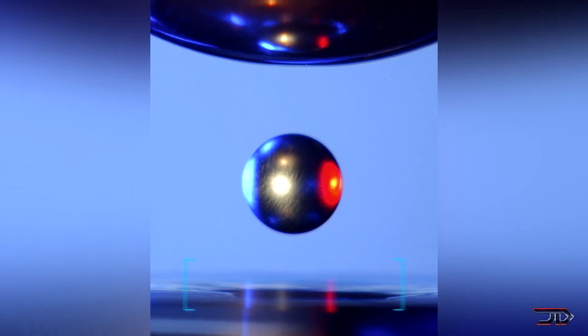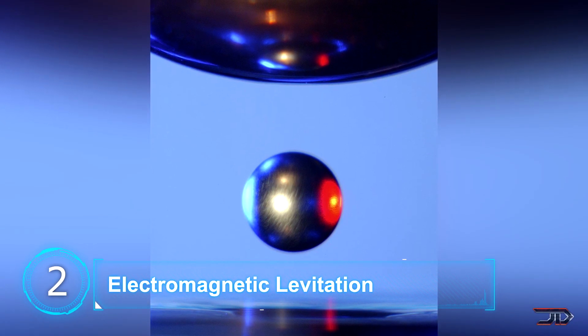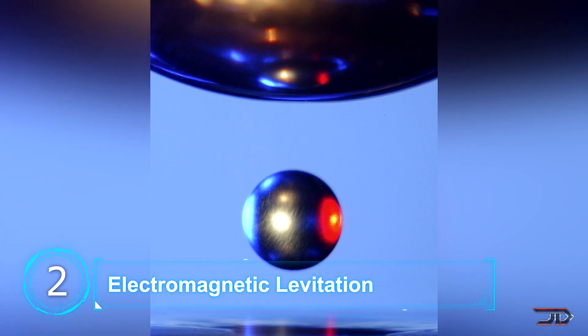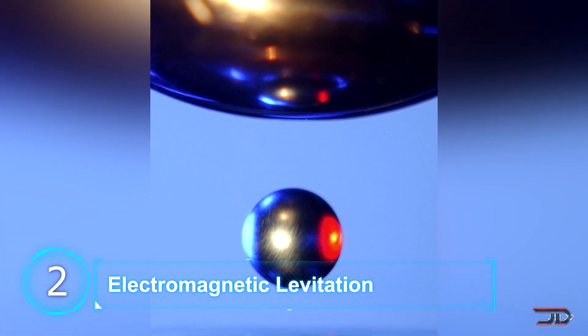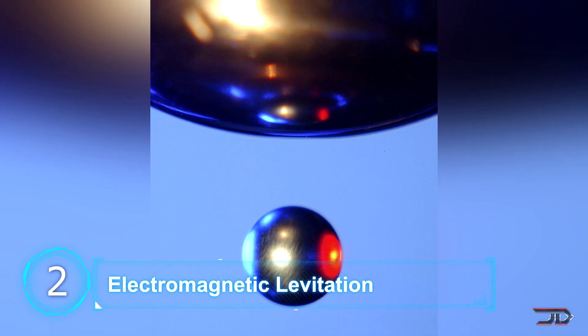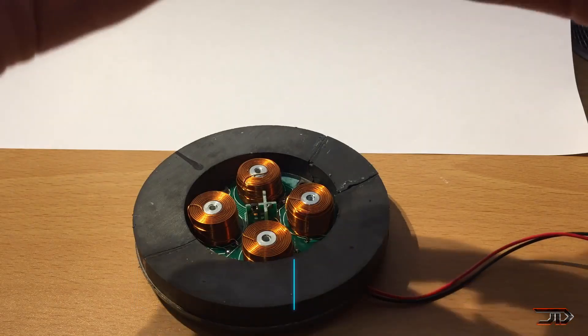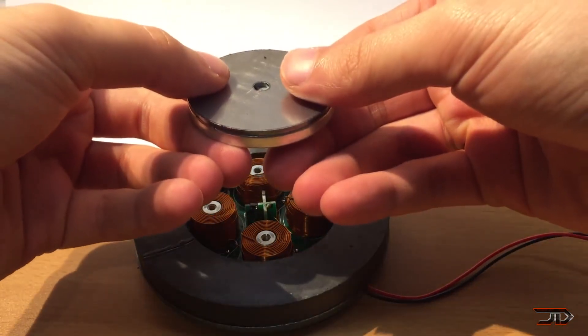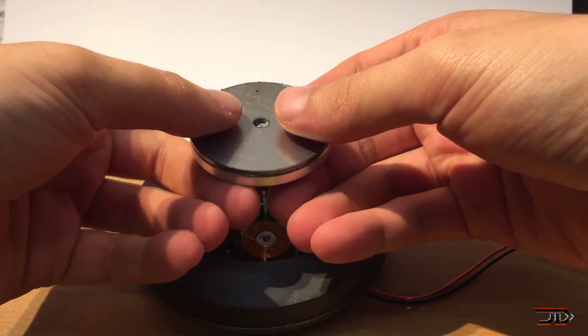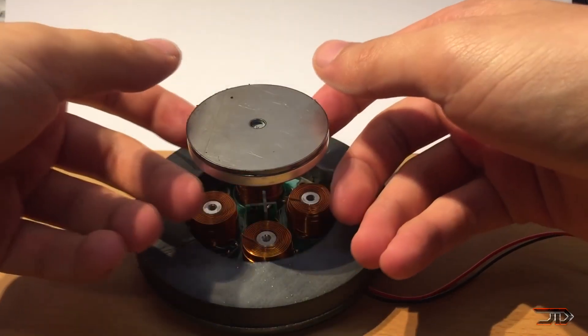We move on to number two and look at electromagnetic suspension. This type of levitation works by altering the current and strength of the magnetic fields produced by the electromagnets. So most of those gimmicky floating gadgets that you see all the time use this type of method and even the maglev trains utilize electromagnetic suspension.